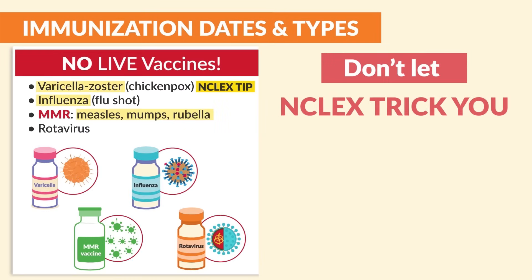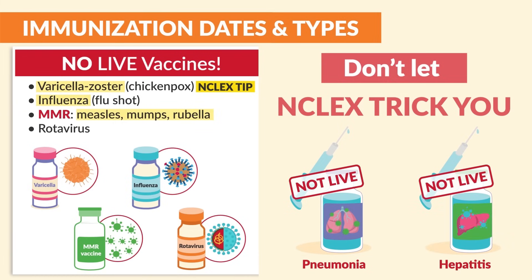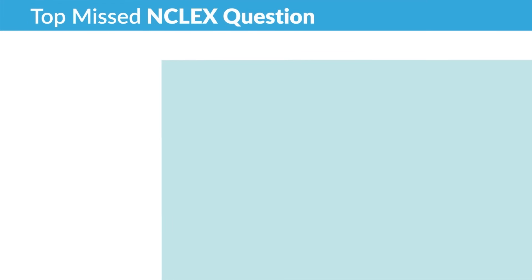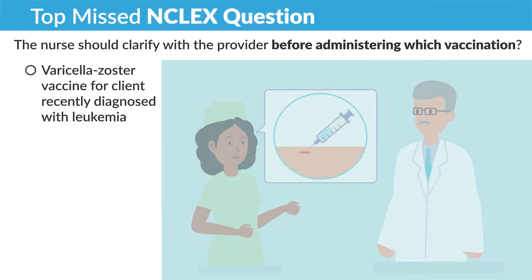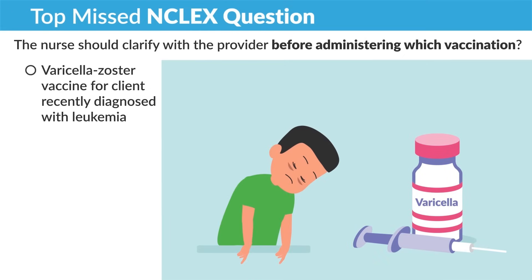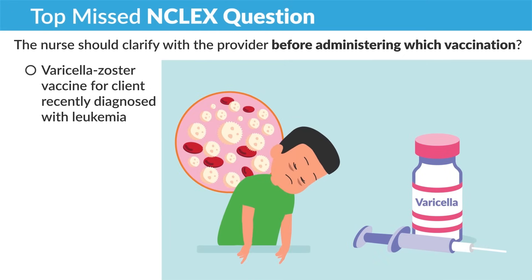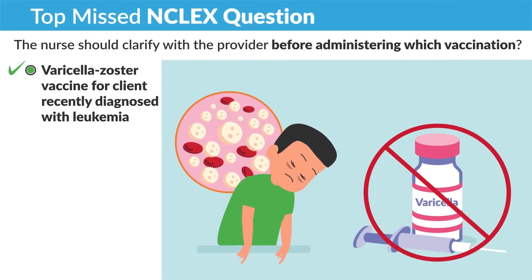Don't let the NCLEX trick you here — the pneumonia vaccine is not a live vaccine, and neither is the hepatitis vaccine. A top missed NCLEX question: 'The nurse should clarify with the provider before administering which vaccination?' — Varicella zoster vaccine for a client recently diagnosed with leukemia. Yes, no live vaccines to low immune system clients.